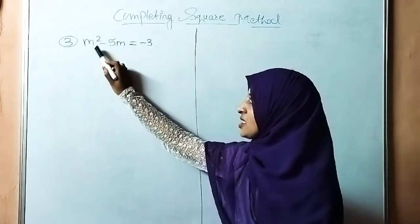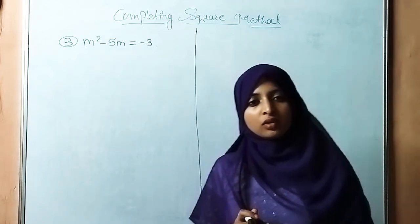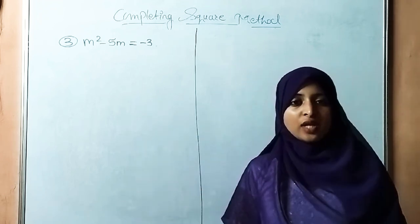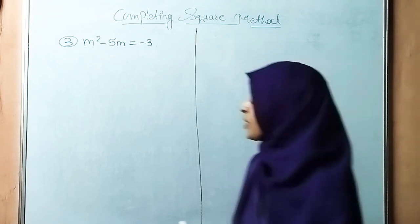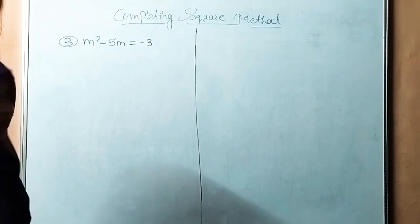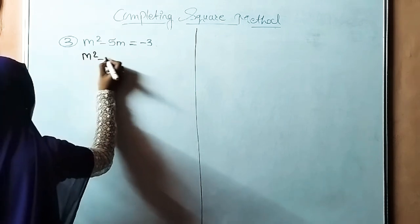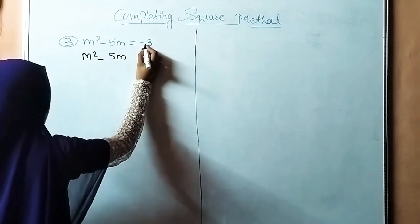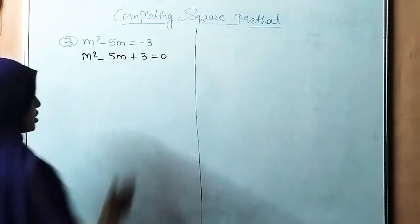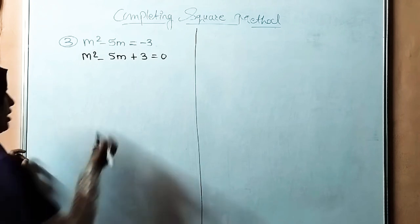Now we discuss the third question. The third question is m square minus 5m equals minus 3. The first stage to solve using the completing square method is to write it in the standard form of quadratic equation. Shifting minus 3 to the left side, we get m square minus 5m plus 3 equals 0.